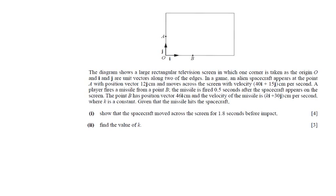What is going on? The diagram shows a large rectangular television screen, in which one corner is taken as the origin O, and I and J are unit vectors along two of the edges. In a game, an alien spacecraft appears at the point A with position vector 12J, which makes that arrow here. That makes sense, because it only goes up, it doesn't go to the left or to the right.